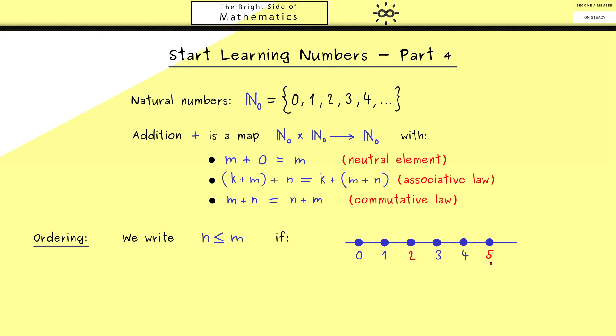For example why should 5 be greater than 2? Of course it's simply because we can add something to 2 to reach 5. With the natural numbers it does not work the other way around. In the formula this reads as there exists a k in the natural numbers such that m is equal to n plus k.